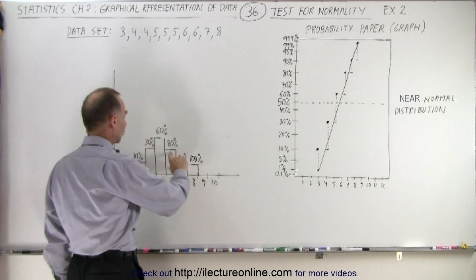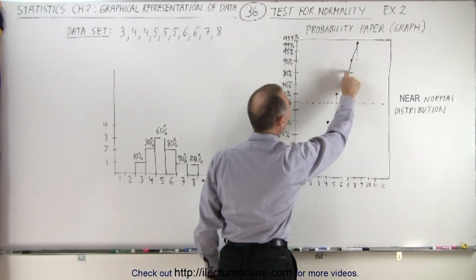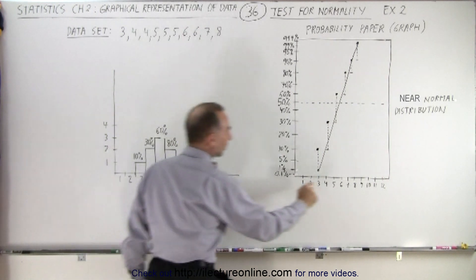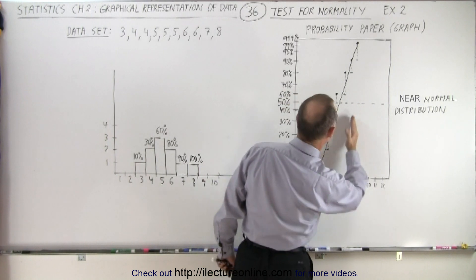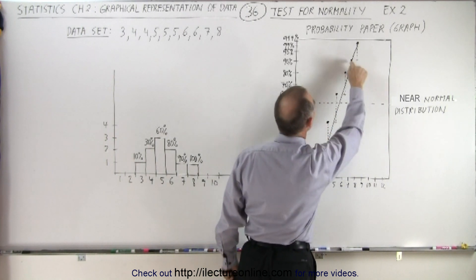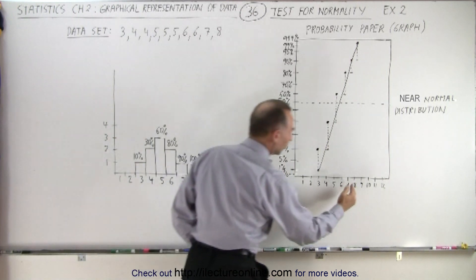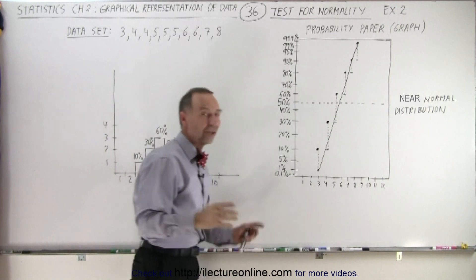For the number 6 you go from 60% to 80%. For the number 7 you start at 80% and go to 90%. For the number 8 you go from 90% to 100%. You put the range for each data point.